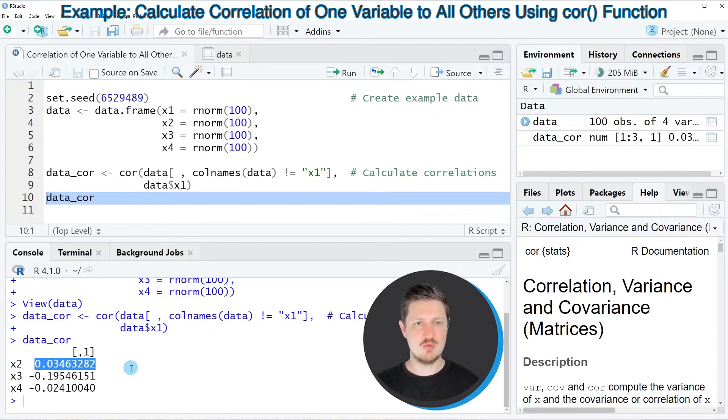So for instance, the correlation between the column x1 and the column x2 is 0.034.